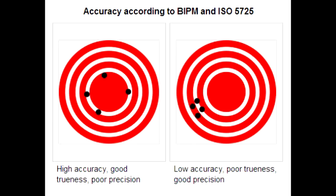The first picture shows accuracy — results within the target range. The second shows precision — results in a localized area with absence of random variation. The third shows both accuracy and precision — all results in the bullseye. The fourth is neither accurate nor precise — results all over the place.